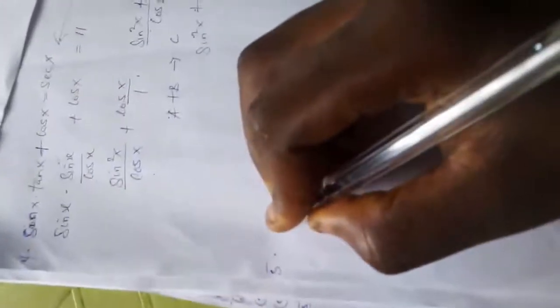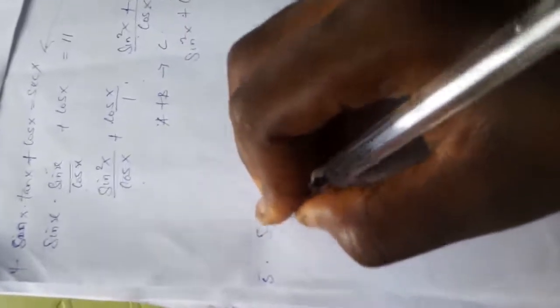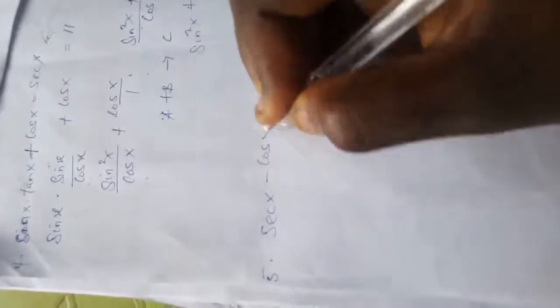The last problem for tonight is number 5. If you have sec x minus cos x, prove that it is equal to tan x sine x. Recall my first rule, convert everything that is not sine and cos to sine and cos. Now I have sec there. And from the last problem we solved, sec equals inverse of cos.